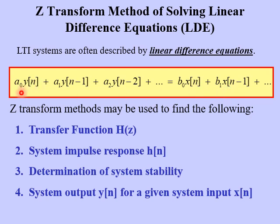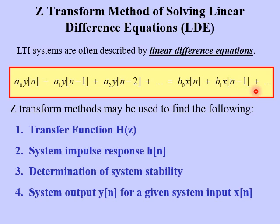Each term has a coefficient. For example, A0 goes with y of n, A1 goes with y of n minus 1, A2 with y of n minus 2, and so forth. On the right side, we use b for the coefficient: b0 times x of n, plus b1 times x of n minus 1, and so on.